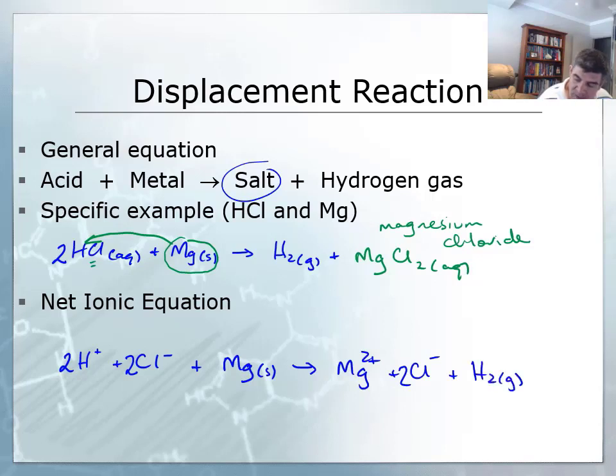So as we've done previously, where we have spectator ions, we can always cancel those out. In this case, we only have one spectator ion, which is the chloride ions. When we cancel those out, our net ionic equation is going to be 2H+ plus Mg solid, goes to Mg2+ plus H2 gas.